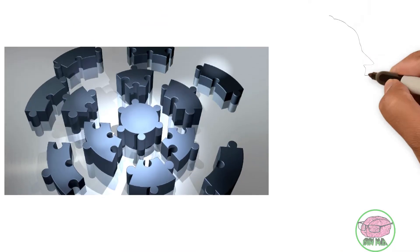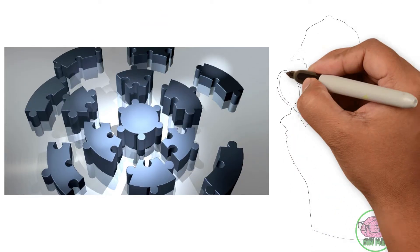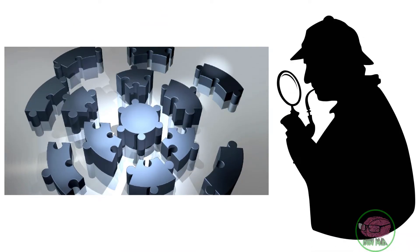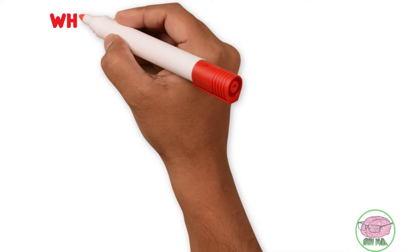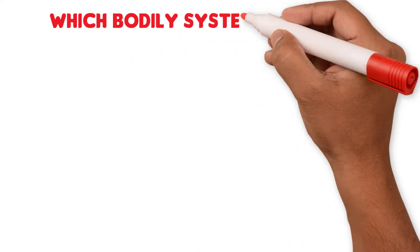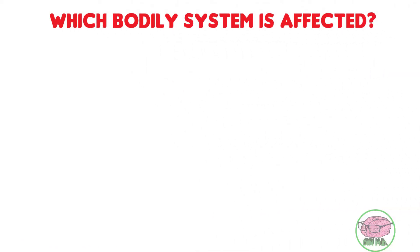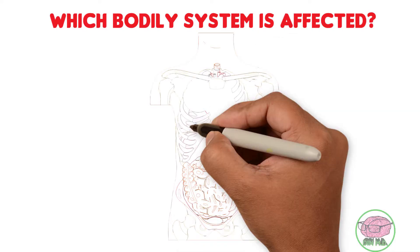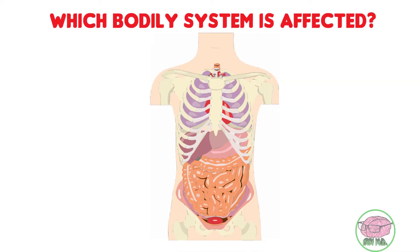Now that we have all the pieces of the puzzle, we can, like a detective, figure out what's wrong with our patient. The first question: which bodily system is affected? With vomiting, abdominal pain, distension, and constipation, we can easily say the affected system is the gastrointestinal system.